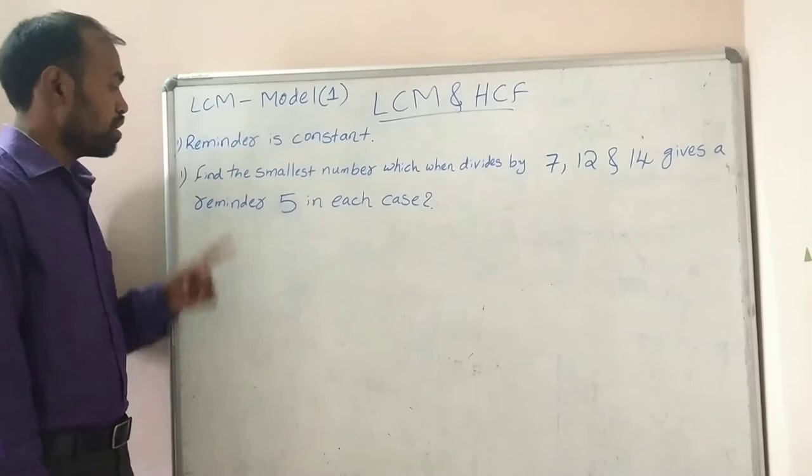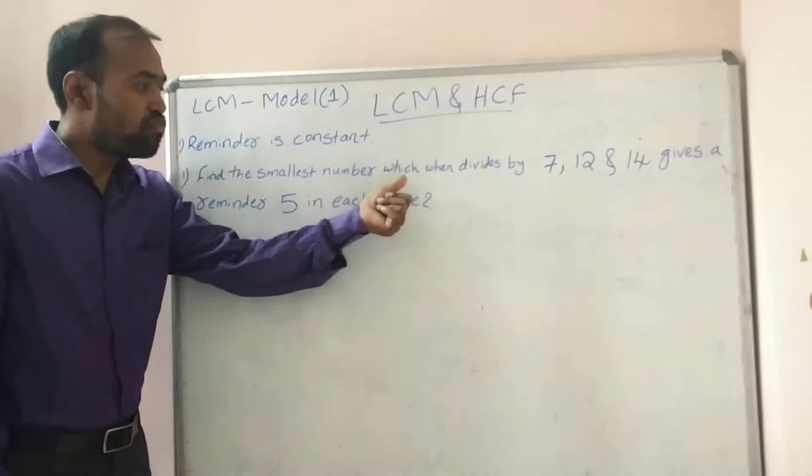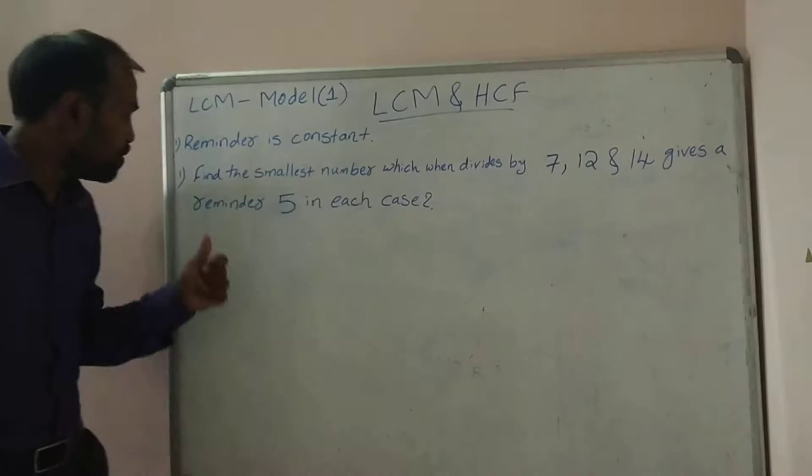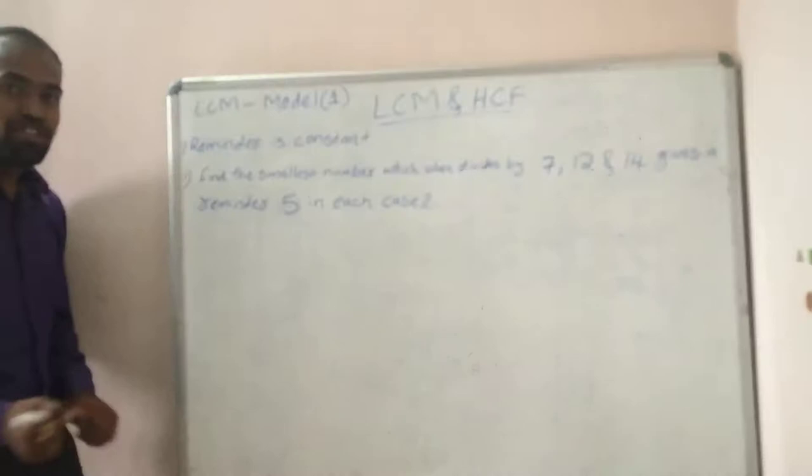First we will discuss Model 1: Remainder is Constant. Find the smallest number which when divided by 7, 12, and 14 gives a remainder of 5 in each case.